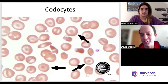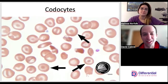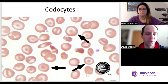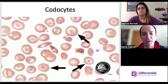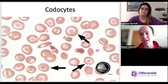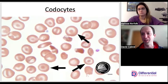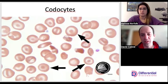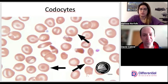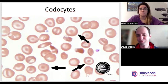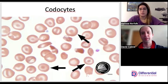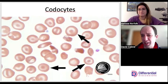Codocytes, also known as target cells — med techs and med lab scientists probably reference them as target cells most often. Generally you have less hemoglobin inside the cell, giving this incomplete fill visual picture — it looks like a target. They're associated with hemoglobinopathies like sickle cell, hemoglobin SC, and thalassemias.